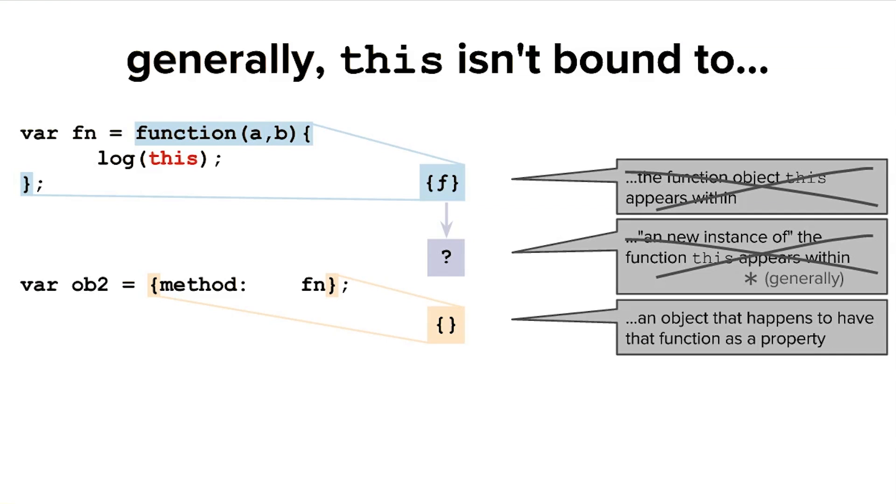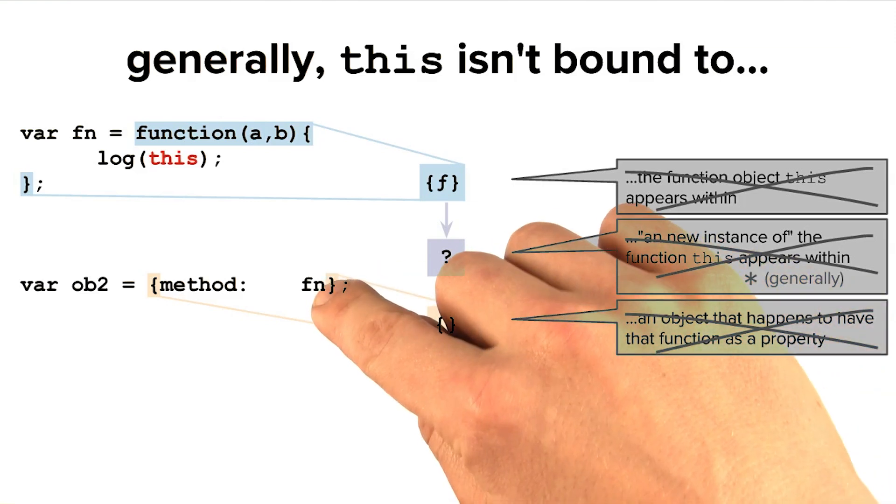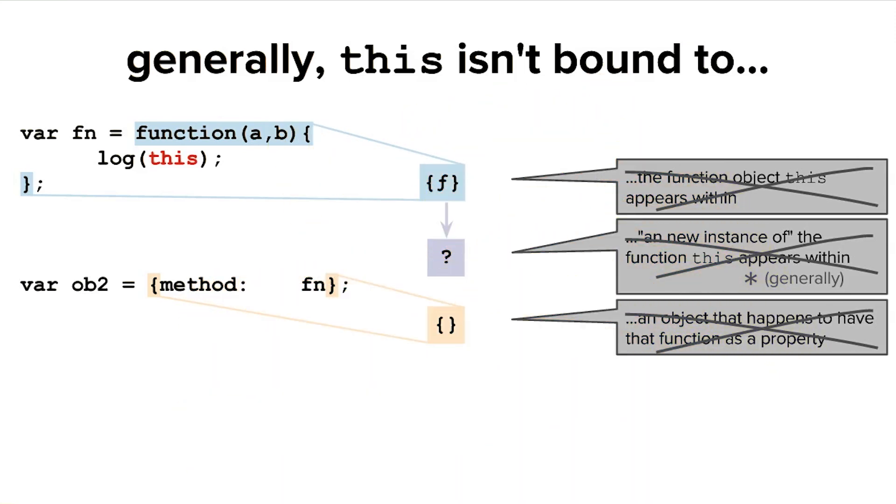This is actually one of the most popular misconceptions, but it's also not the case. And we'll see why in just a minute. The easiest way to think about this is, what if that same function was a property of two different objects? It doesn't stand to reason that the keyword this would be forced to choose somehow between the two of them.